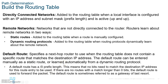Directly connected networks come from configuring an interface. When you type 'int g0/0', assign an IP address, and type 'no shutdown' to activate the interface, the router immediately figures out the network address and places that entry in the routing table as a directly connected route. So a directly connected entry is created whenever you configure and activate an interface on the router.